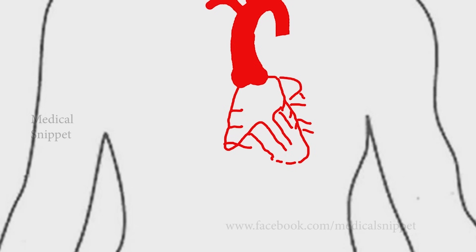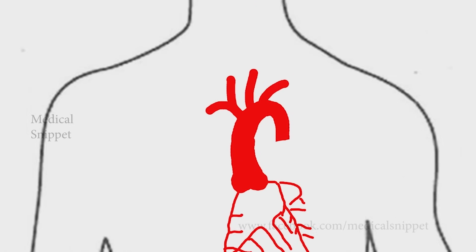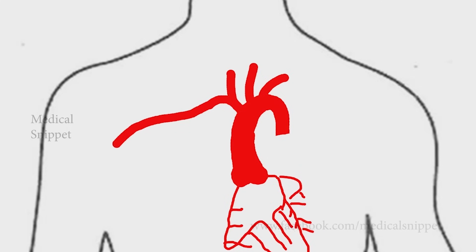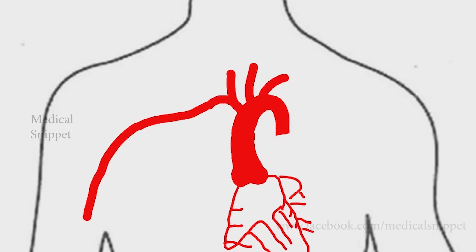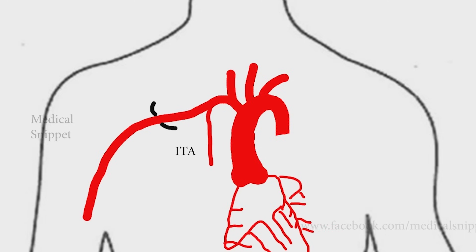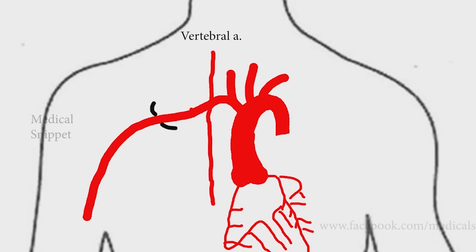Let's see the arterial supply of the upper limb. The subclavian artery is divided into three parts by the scalenus anterior muscle. The first part gives rise to three branches: the internal thoracic artery, the vertebral artery, and the thyrocervical trunk.